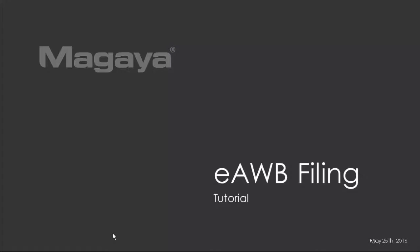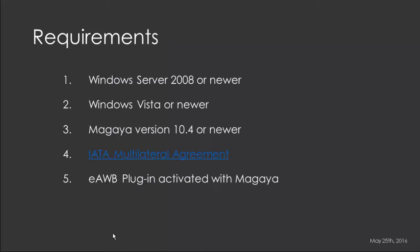Let's see how it works with Magaya. First of all, here are the requirements. You will need a Windows Server 2008 or newer, or if you are using a desktop operating system, it will have to be Windows Vista or more recent. You will also need a Magaya version 10.4 or newer, and you will need to sign a multilateral agreement with IATA, which you can do online.